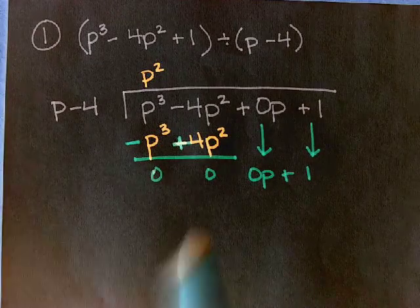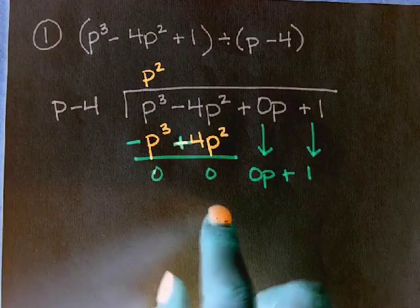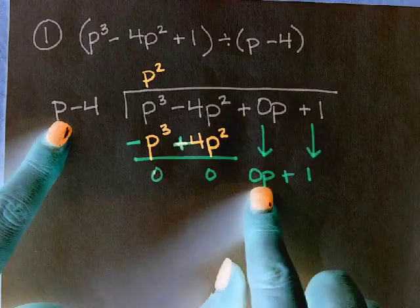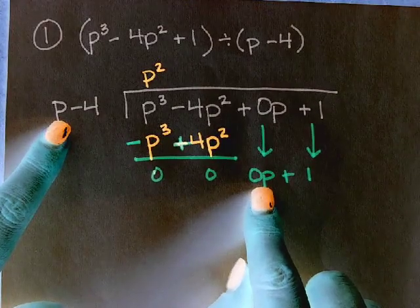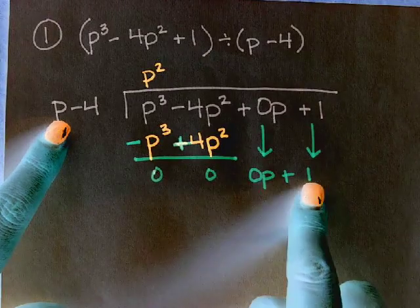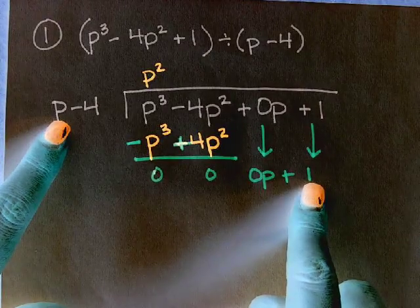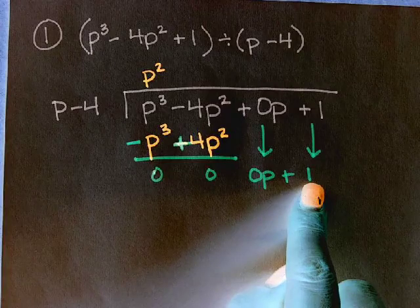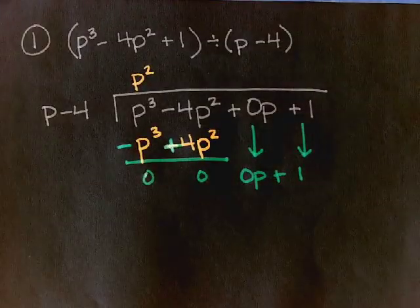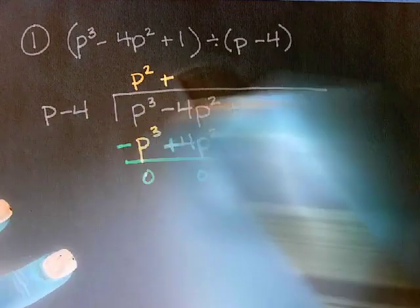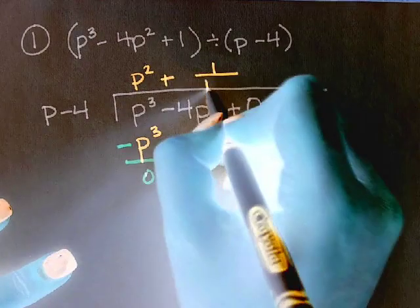And then we say, P times what is zero P? So we're basically done. Okay? So we have a remainder of 1. And what do we do with that? Yeah. Now this remainder is a positive, so I'm going to write plus 1 over P minus 4.